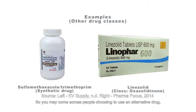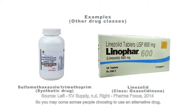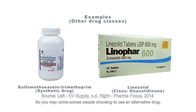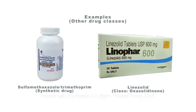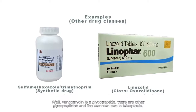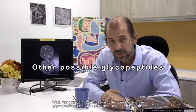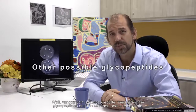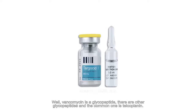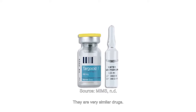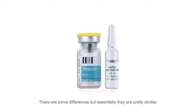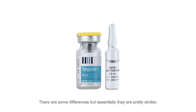Vancomycin is a glycopeptide. There are other glycopeptides, and the common one is teicoplanin. They are very similar drugs with some differences, but essentially they are pretty similar.